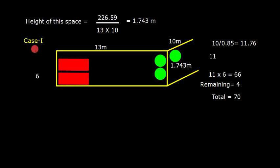Now we will have to study case by case. Say this is Case 1 and the space is like this: 13 meters and this is 10 meters and this available space is 1.743. Then how am I going to place? Well, this 10 meters divided by 0.85 gives me 11.76, so easily I can fit 11 coils here.